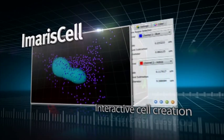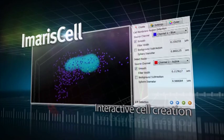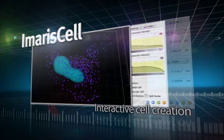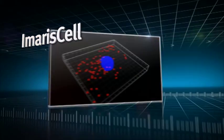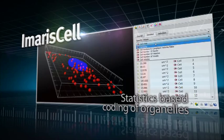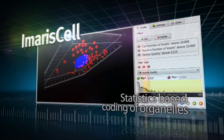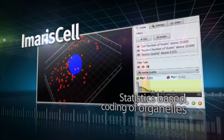Imaris Cell uses Bitplane's powerful image analysis algorithms and intuitive creation wizards to help you along the process of detection, display and editing of the cell's organelles. With Imaris Cell's advanced visualization of newly analyzed organelles, you can color code the nuclei and vesicles according to many statistical parameters, like volume, sphericity, distance from membrane and many more.